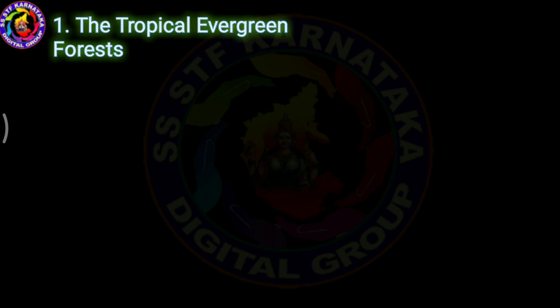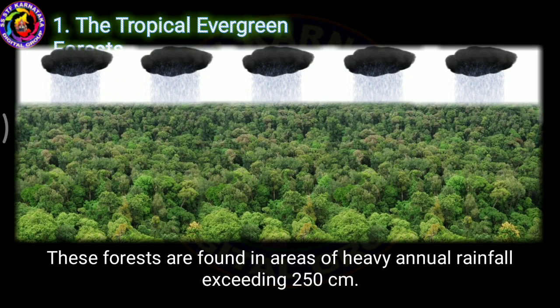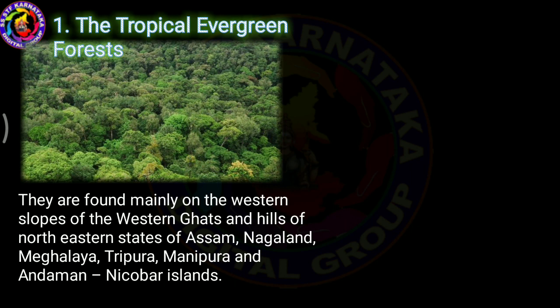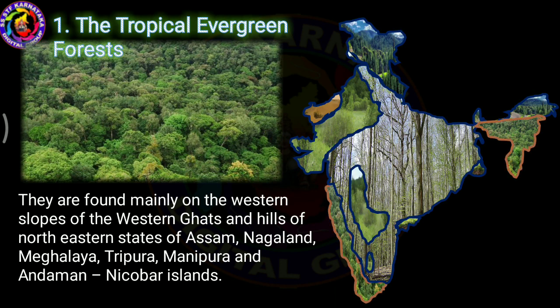The first type is evergreen forest. Evergreen forests are found on the basis of rainfall — where there is heavy rainfall with annual rainfall exceeding 250 cm, there is tropical evergreen forest. These forests are mainly found on the western slopes of the Western Ghats, the northeastern states of Assam, Nagaland, and Tripura, and also in the Andaman and Nicobar Islands.